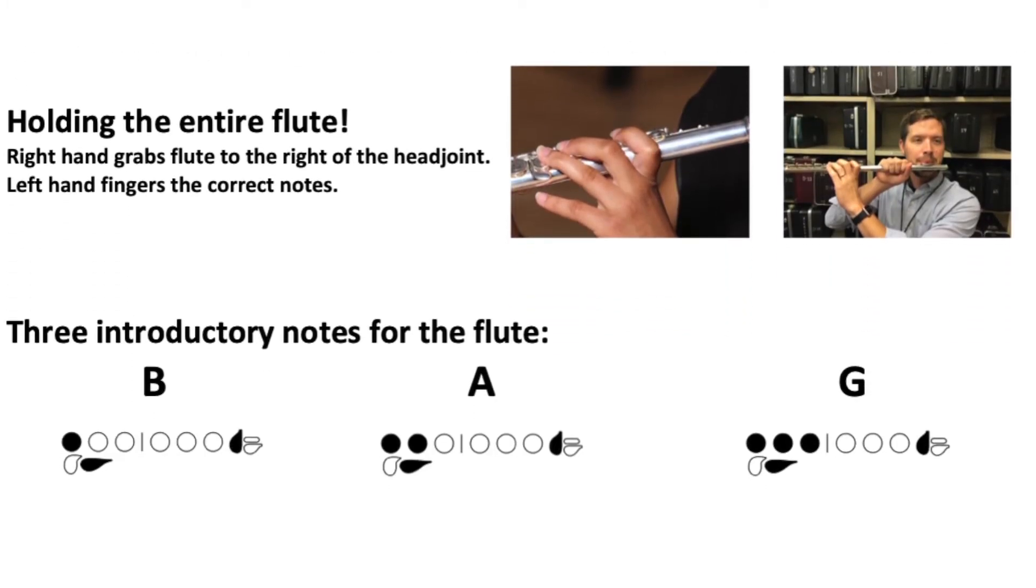Now we'll try holding the entire flute, but we're going to be holding the flute kind of a weird way. Your right hand is going to grab onto the flute to the right of the head joint, like this.